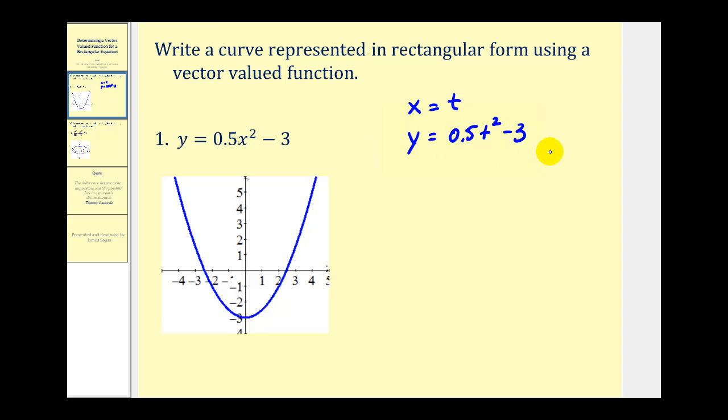Now that we have the parametric equations for this curve, we can express this as a vector-valued function where r(t) = t·i + (0.5t² - 3)·j. Or in component form, we would have ⟨t, 0.5t² - 3⟩.